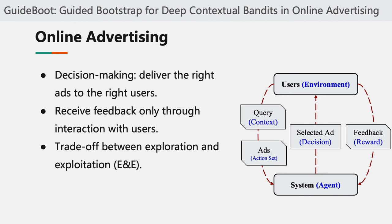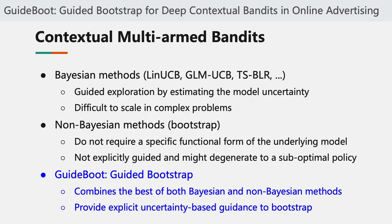So the system has to deal with the trade-off between exploration and exploitation. We know that such problems can be formulated as a contextual multi-armed bandit, also known as contextual bandits. There are two major tracks for contextual multi-armed bandits, which are Bayesian methods and non-Bayesian methods.